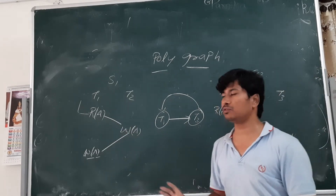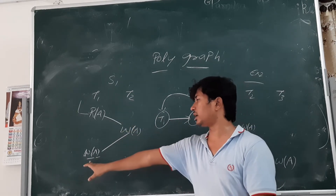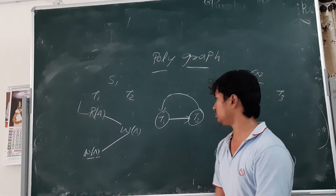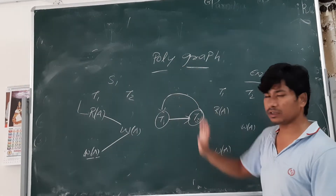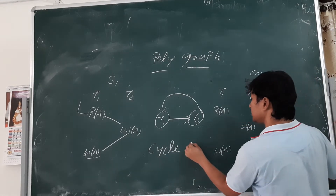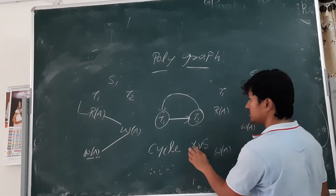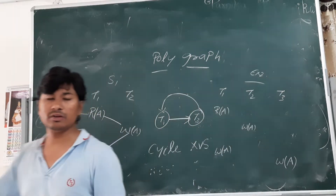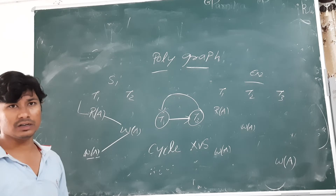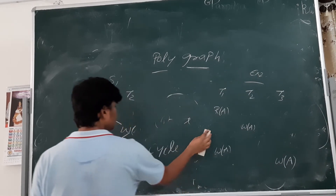Since there is no write-read sequence — after the write, T1 does not read again — we do not need to worry about that condition. We have completed the polygraph construction. Now we check whether any cycle exists. There is a cycle (T1→T2→T1), so we say that this schedule is not view serializable. This matches our earlier finding when we checked view equivalence directly.